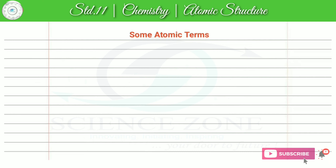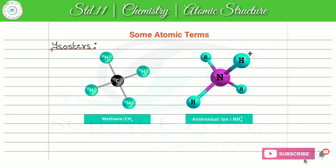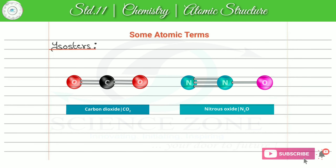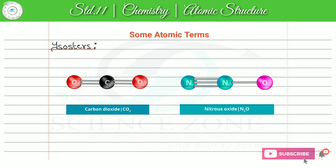Now our next topic is isosteres. Isosteres जो हैं, they are atoms, molecules, or ions which have same number of atoms, same number of electrons, and they will also show the same molecular structure. यानि isosteres atoms, molecules, या ions हो सकते हैं। इनके अंदर number of electrons same होंगे, number of atoms same होंगे, and इनका molecular structure भी same होगा।